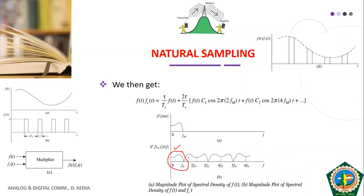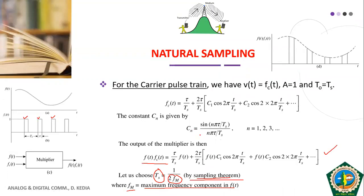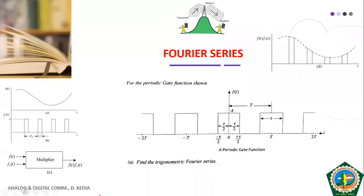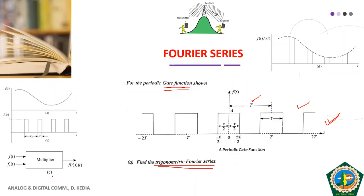That was the mathematical representation of the naturally sampled PAM signal. Now I'll explain how we obtained the Fourier series expression for the carrier pulse train. The carrier pulse train — also called the gate function — has amplitude A for duration from -tau/2 to tau/2, and is zero for the rest of the period. This gate function must be represented using trigonometric Fourier series comprising sine and cosine functions.